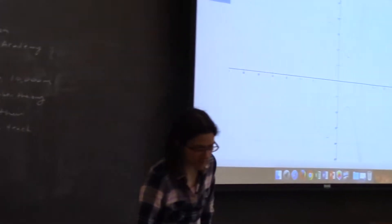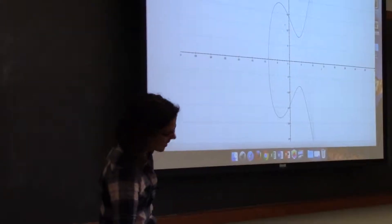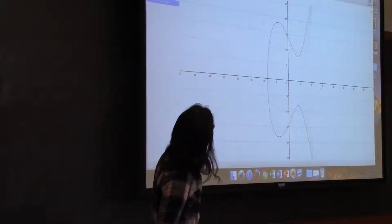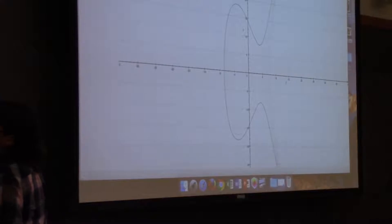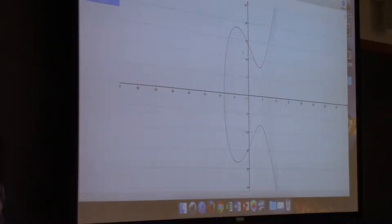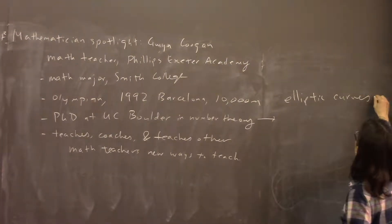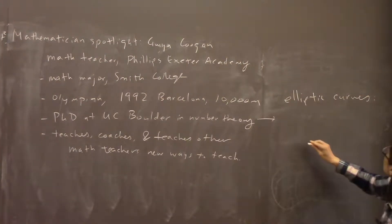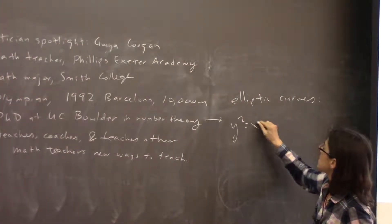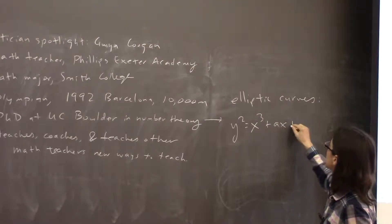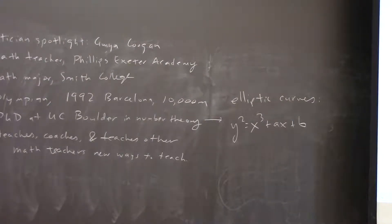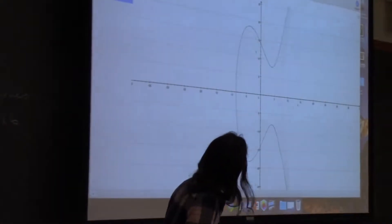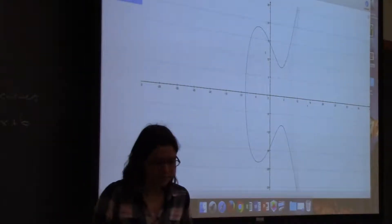Here are some elliptic curves — I've drawn a whole family of them. Elliptic curves are things of the form y² = x³ + ax + b, where a and b are numbers. I've drawn a whole family of them here, and I hope you can see at least one of them pretty well.